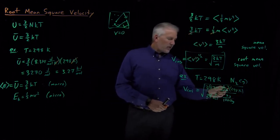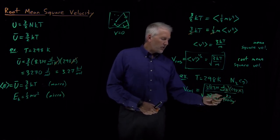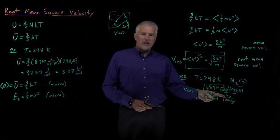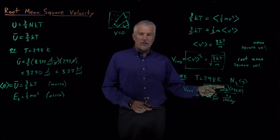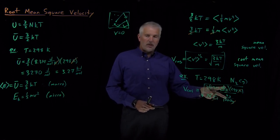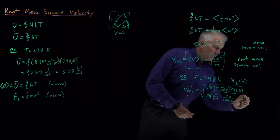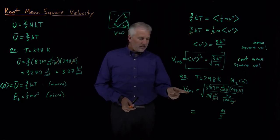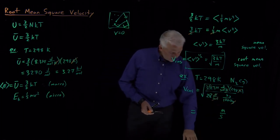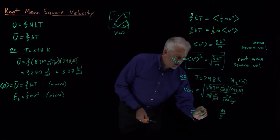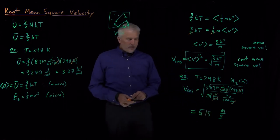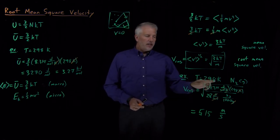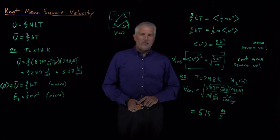Just to double-check: Kelvin cancels, grams cancel leaving kilograms, and 1/moles cancels between numerator and denominator, leaving joules divided by kilograms. A joule is a kilogram·meter²/second², so after canceling kilograms, we're left with meter²/second² under the square root, giving meters per second. Plugging those numbers into a calculator, the result is about 515 meters per second — the root mean square velocity of nitrogen molecules at 298 Kelvin.